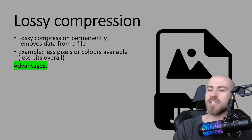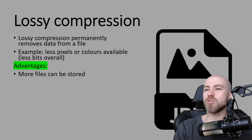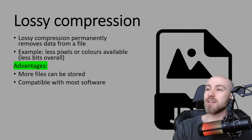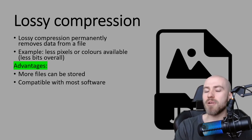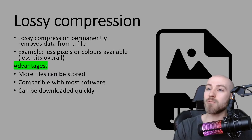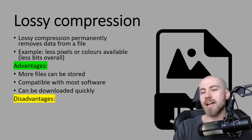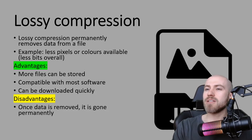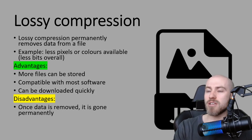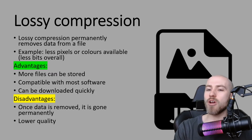So obviously it comes with some advantages — having a smaller file size means you can store more files using lossy compression, and often images compressed this way, like a JPEG, are compatible with most software so you can open them on pretty much any program. With the small file size they can also be downloaded really quickly. As mentioned though, it does come with some disadvantages: once the data has been removed it is actually gone permanently, so if you reduce the number of pixels you can't get those back and it will have lower quality overall.